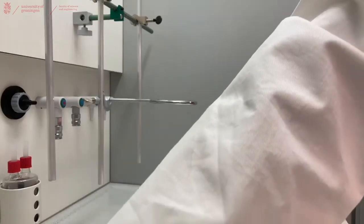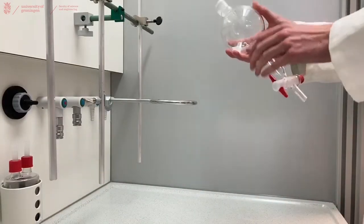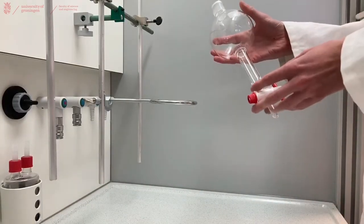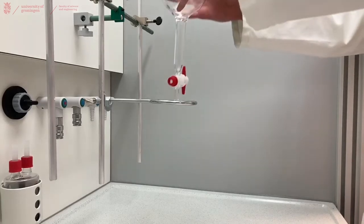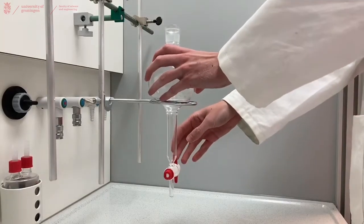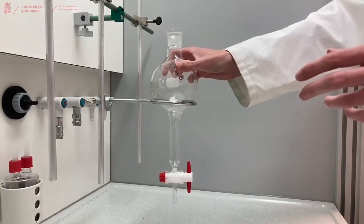When the ring is properly attached, you can take your separator funnel. Use the separator funnel which is of sufficient size to hold your crude product and any washing liquids you intend to use. Place it in the metal ring.